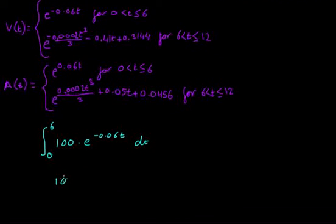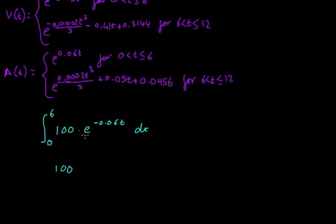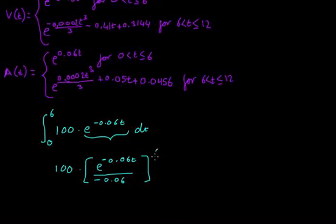How do we find the integral of this? It is the whole function divided by the derivative of the top part. So that is e to the negative 0.06t divided by negative 0.06, still between 6 and 0, and of course that is the present value.